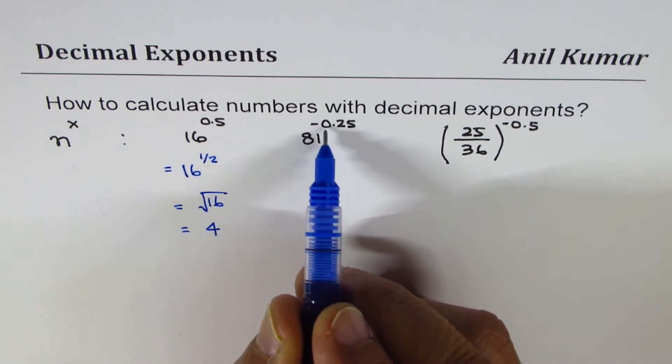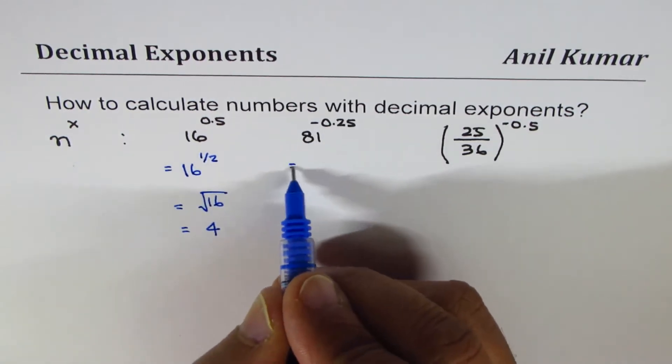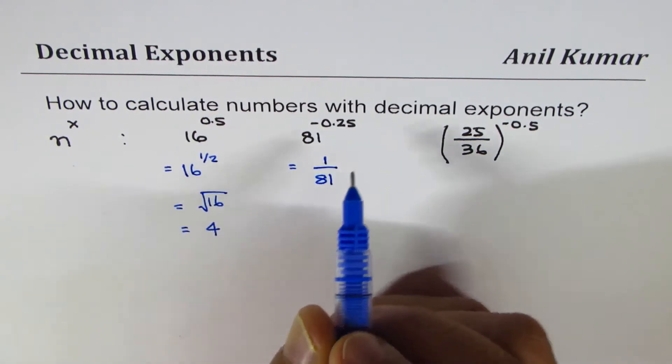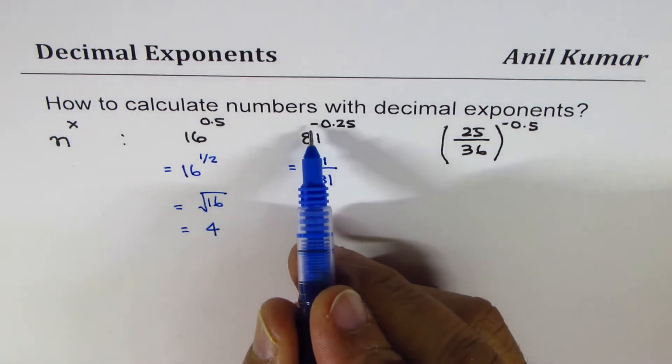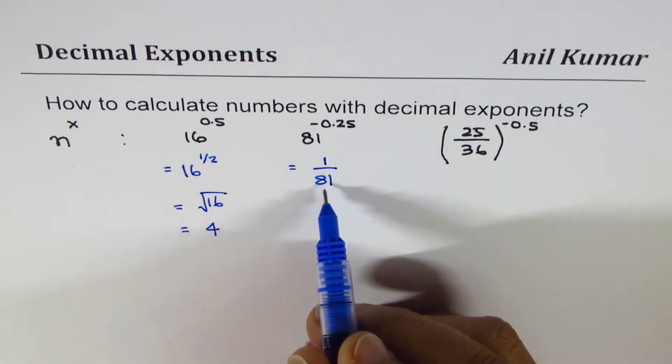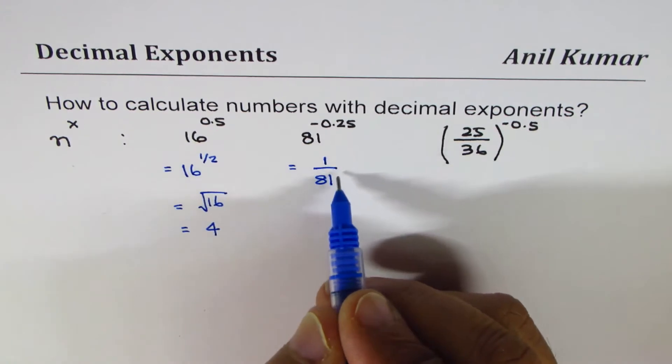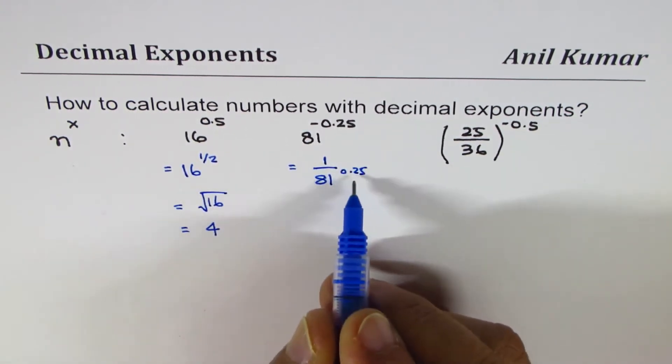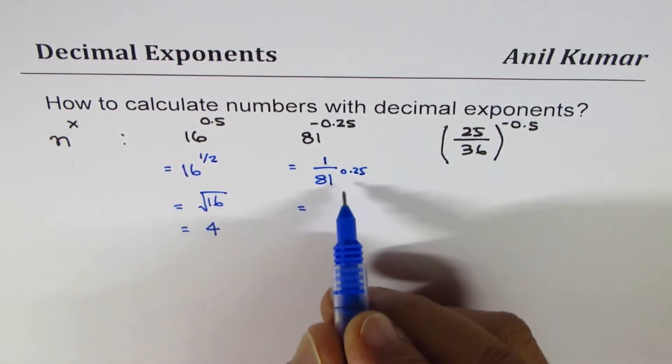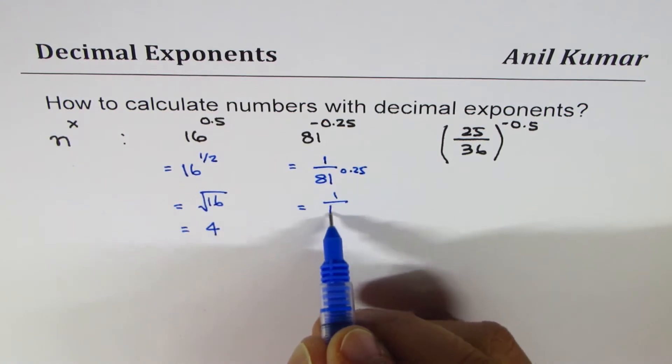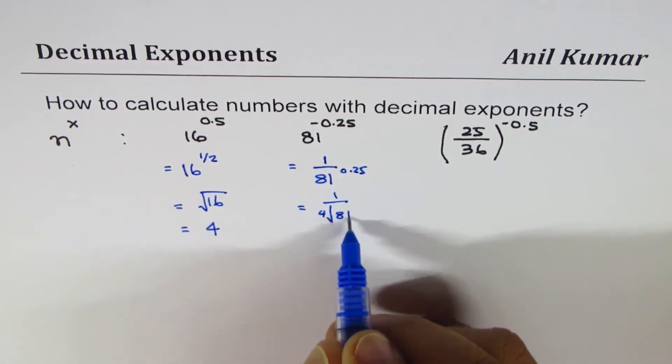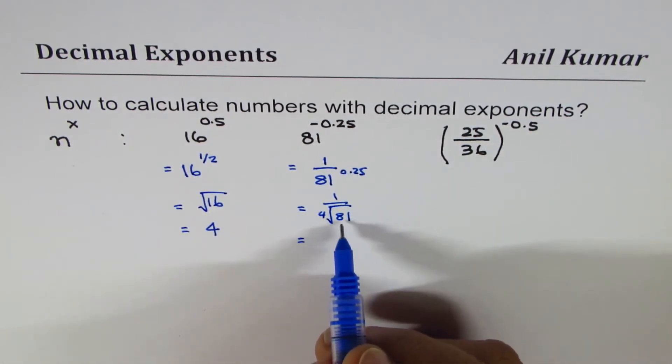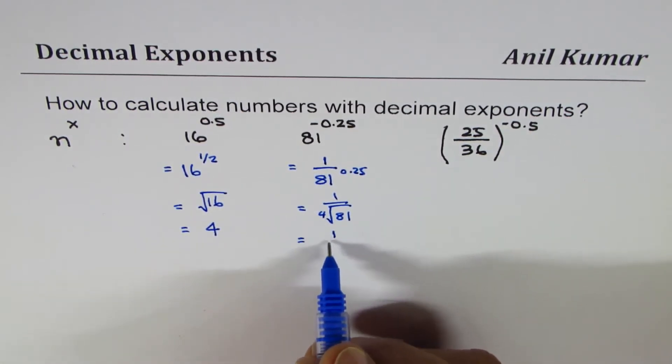When I say 81 to the power of minus 0.25, minus makes it reciprocal so it becomes 1 over 81, and the exponent remains at 0.25. Now 0.25 is like a quarter, so what we are looking for here is the fourth root of 81.